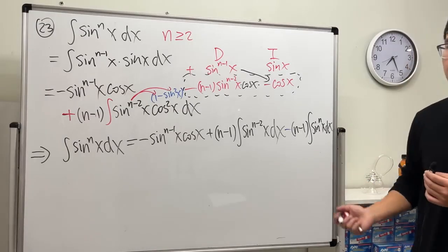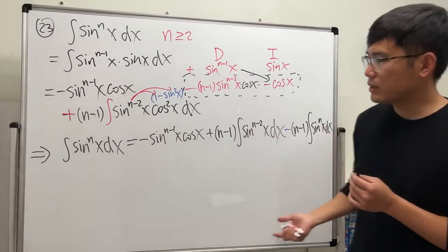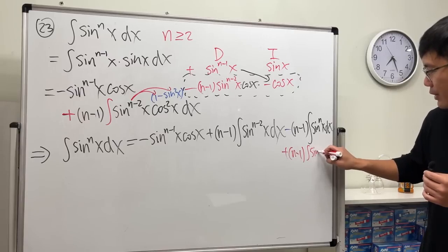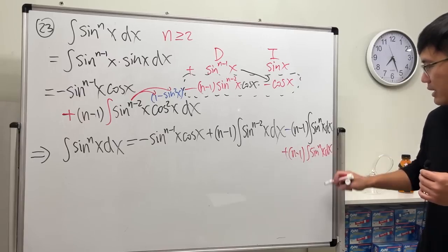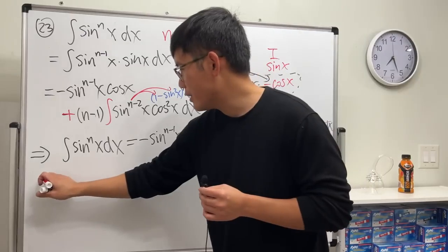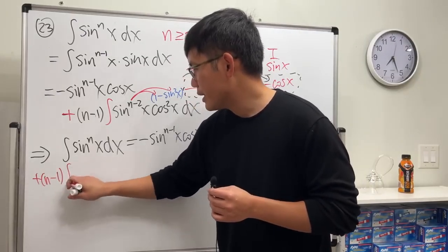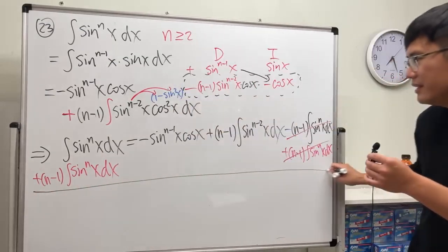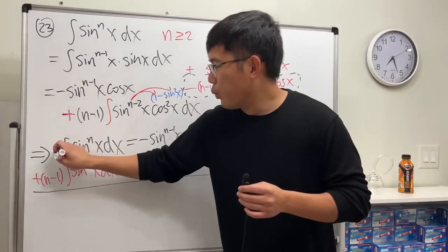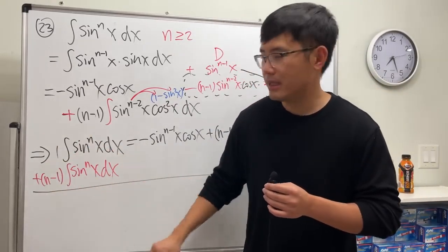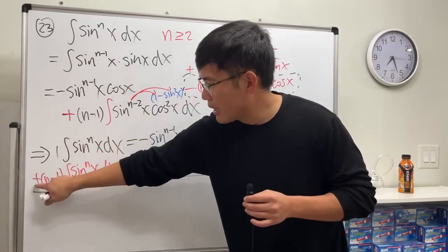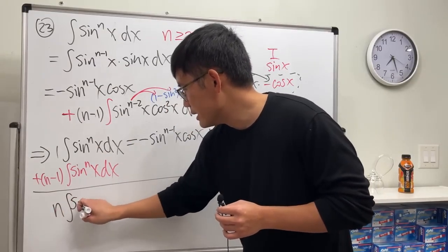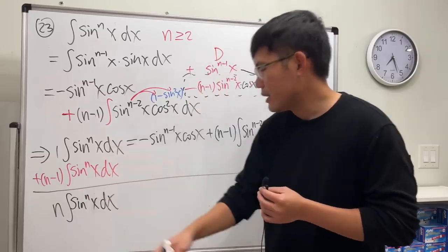We add n minus one times the integral of sine to the nth power x dx to both sides — those cancel on the right. On the left side, one plus n minus one gives us n, so we have n times the integral of sine to the nth x dx. This is how we deal with a repeating integral in integration by parts.